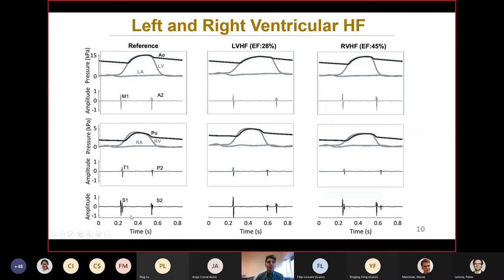Here we have three panels. The first panel is a reference. The second panel is left ventricular heart failure. The third, right ventricular heart failure. The first row is showing pressure and heart sounds generated from the left side of the heart. The second row from the right side of the heart. And the last row shows the heart sound. Now, it is noticeable that we have a reverse splitting in left ventricular heart failure. But in right ventricular heart failure, we have an exaggerated splitting in S2.